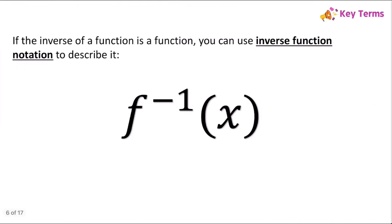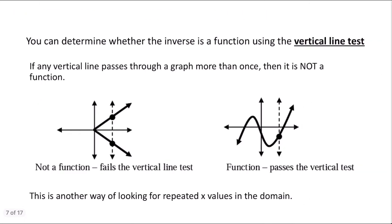Inverse function notation still uses f, but with a negative one superscript — that's what tells us we're talking about the inverse. Then we still have x in parentheses because x is the input. You can determine whether the inverse is a function using the vertical line test: if any vertical line passes through the graph more than once, it's not a function. Any vertical line will only pass through the graph of a function once — this is another way of looking for repeated x-values in the domain.